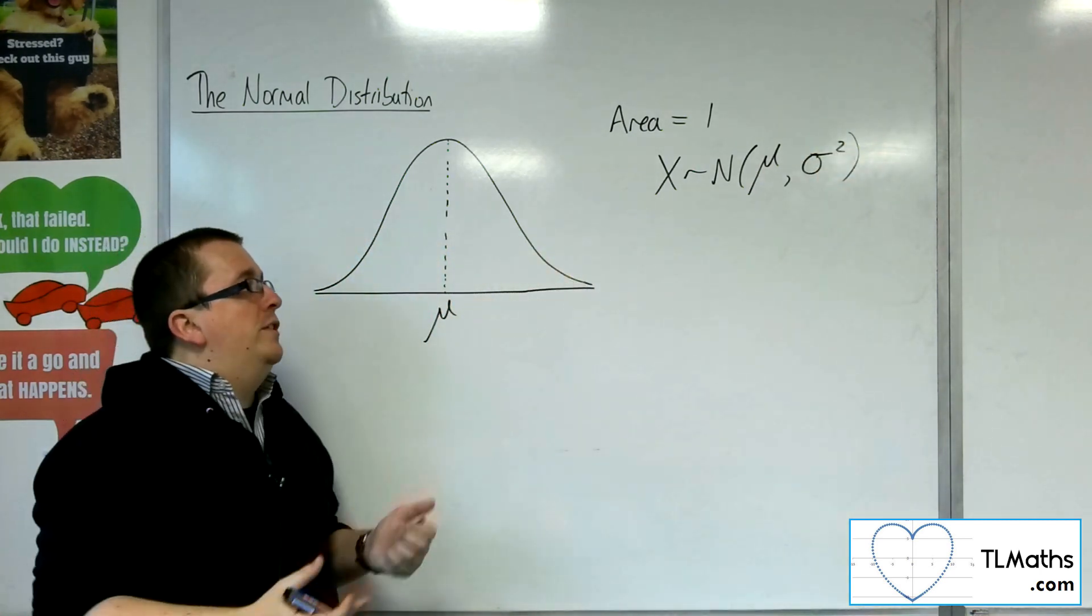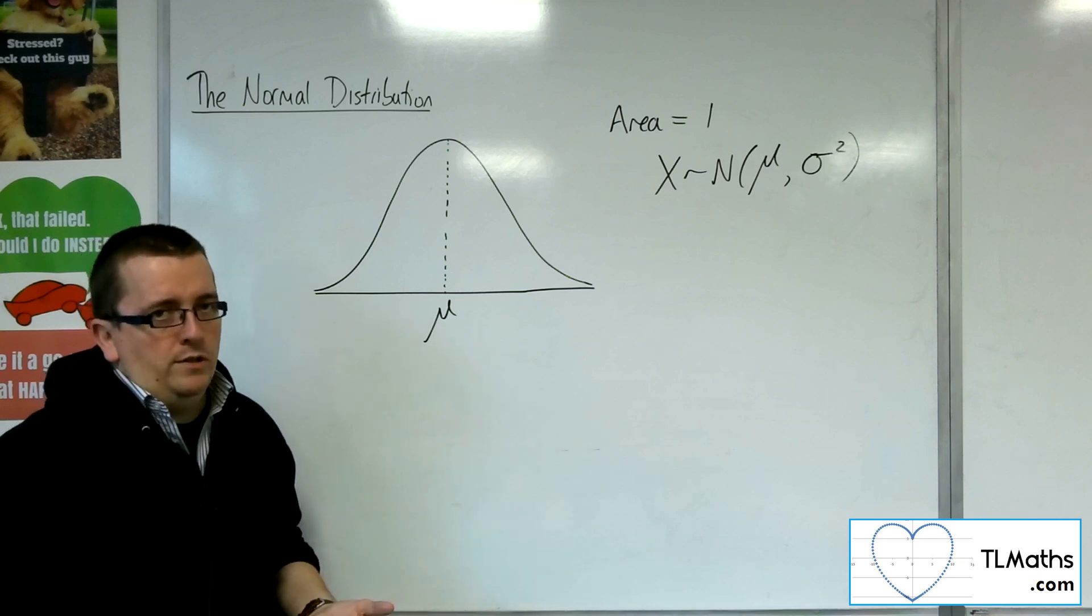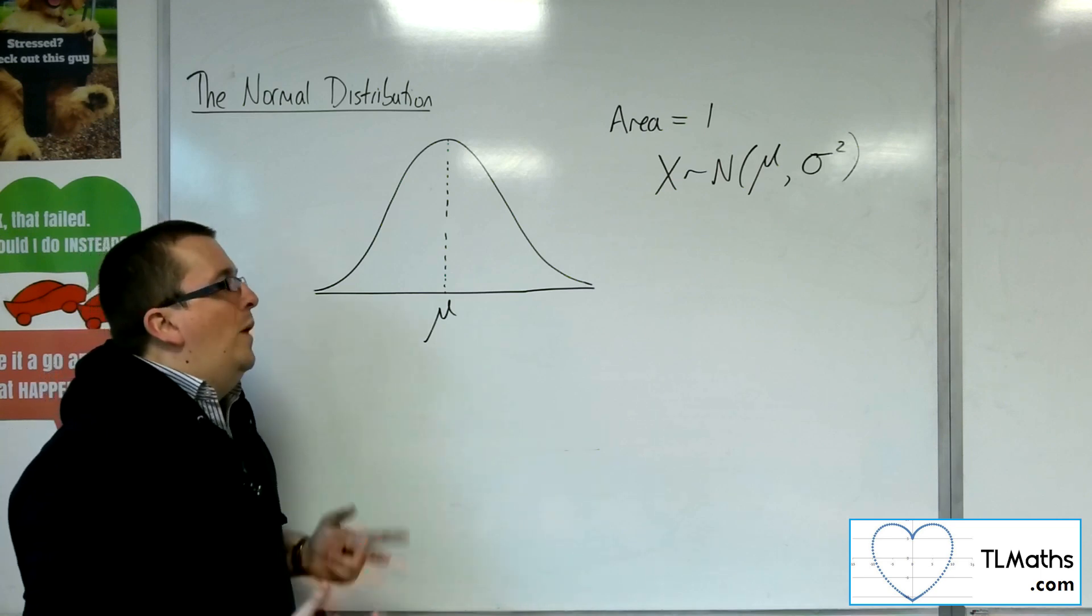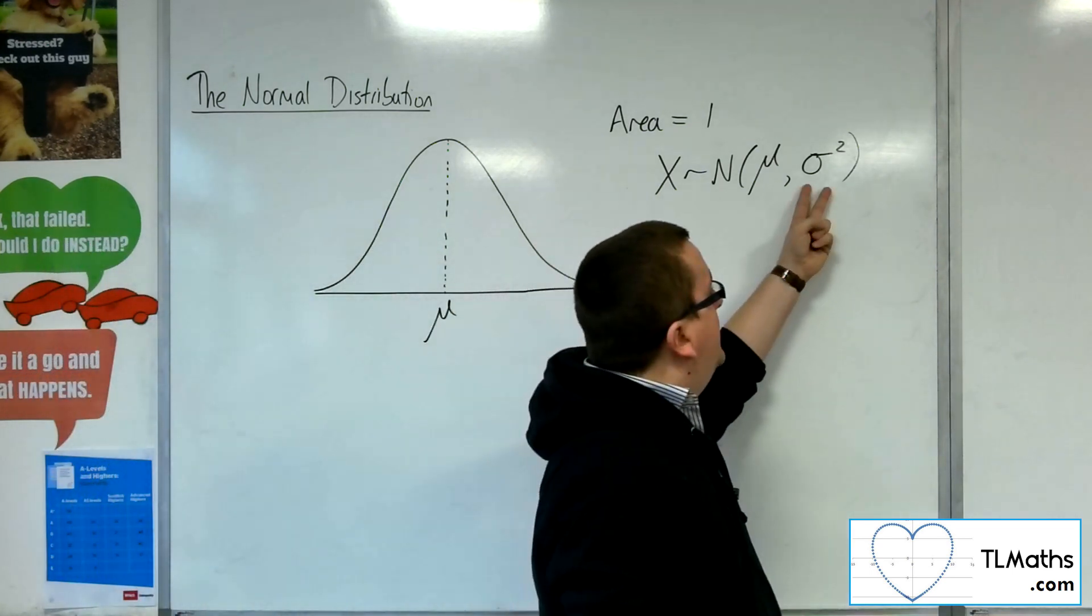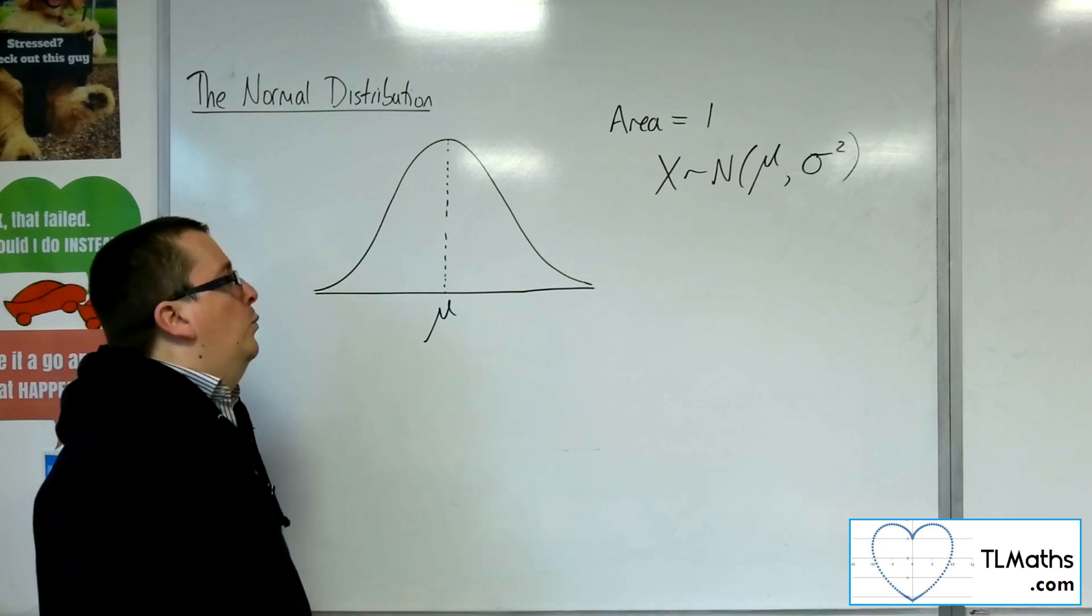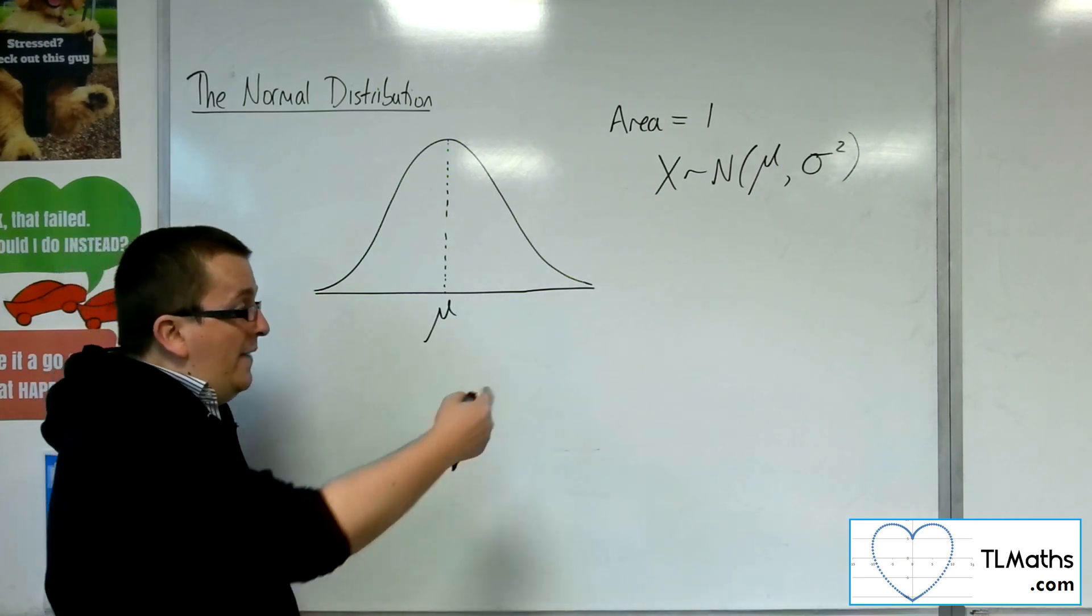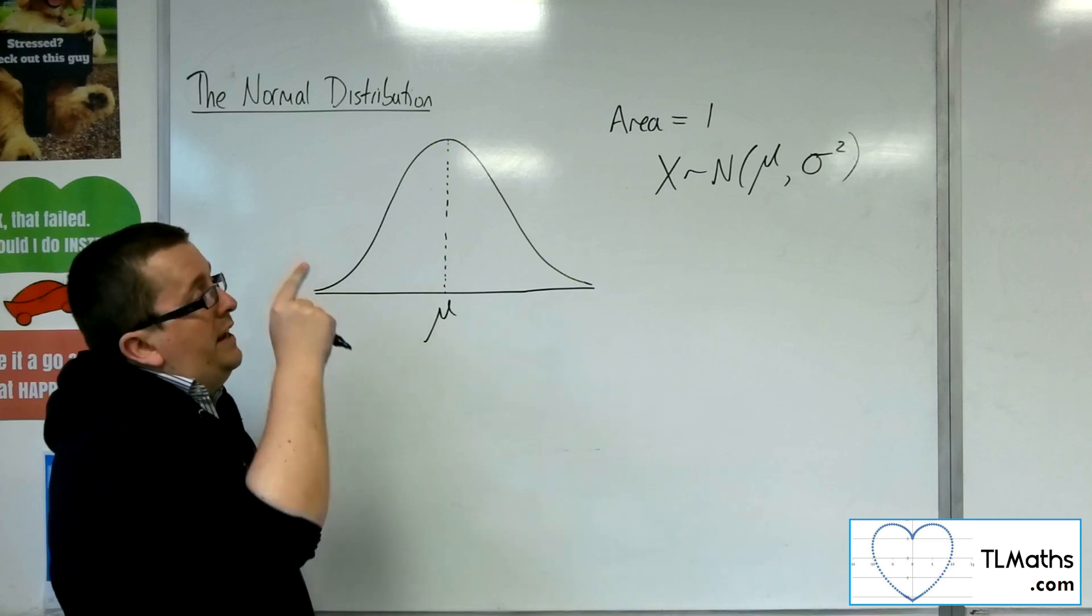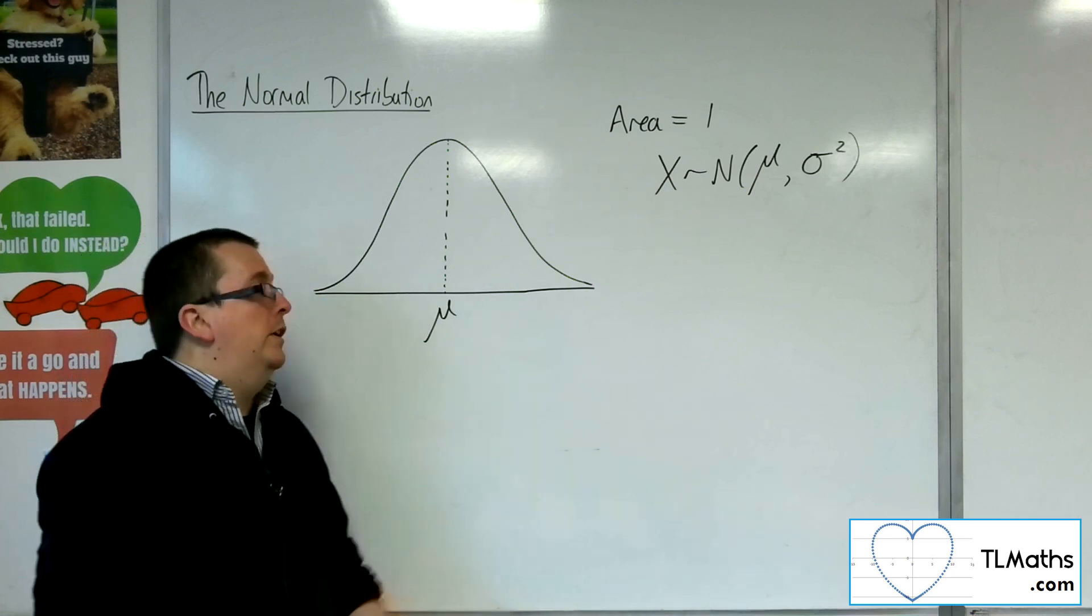Now, the unfortunate thing is that in the majority of cases, we want to talk about its standard deviation. But the way that we write it down in notation for historical purposes, we write it down with its variance, which is a little bit of a nuisance, but we can take care of that. So the mean tells you where the centre is. The variance or standard deviation tells you how spread out it is.